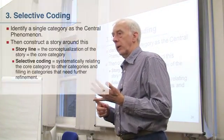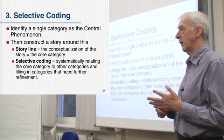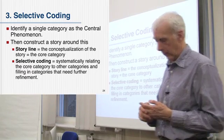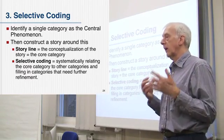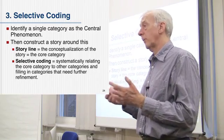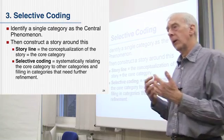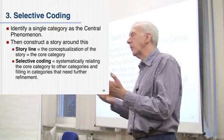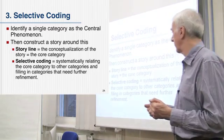So after open coding and after axial coding, we have a third stage in Strauss and Corbin's grounded theory, and that is selective coding. The idea here is to try to select and identify particular categories or codes that form some kind of core, some kind of essential activity or essential concept, which has the power to elucidate lots of different aspects of the setting or situation you're looking at.